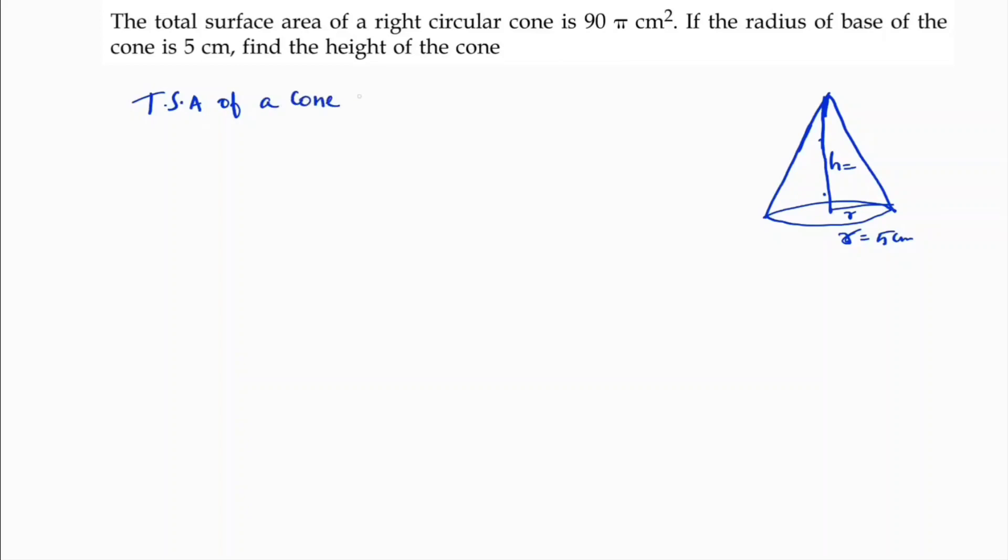The formula is πr(r + l). So the total surface area of a cone is given, so 90π equals πr(r + l). Here, π...